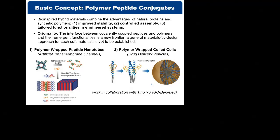In the context of this broader picture, I'm focusing on two different systems today. One is what we call polymer wrapped peptide nanotubes, which can be grown in block copolymer domains and polymer thin films to make nanoporous materials. These can be seen as artificial transmembrane channels, just like transmembrane proteins, but in a much simplified fashion, typically used for separations applications — separating ions from water or different types of gas molecules. The second part of the talk will focus on polymer wrapped coiled coils, which are often used as drug delivery vehicles and have found applications in hydrogels as well. This work is in collaboration with Ting Xu's group at the University of California, Berkeley.